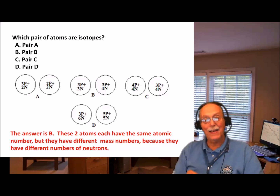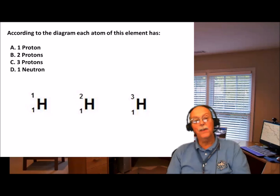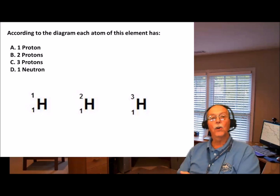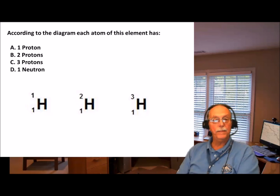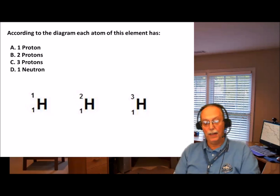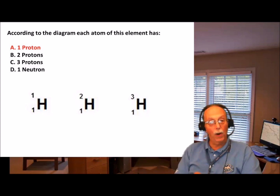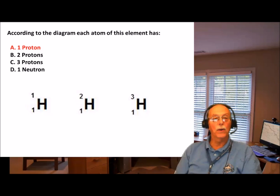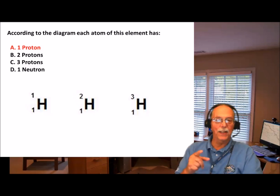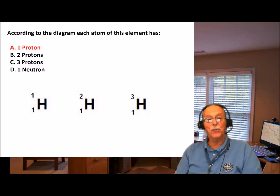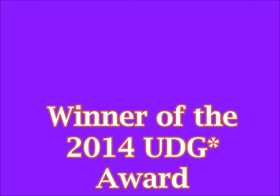Remember, the mass number is the mass of the nucleus. Now we're back to hydrogen. Answer this question: according to the diagram, each atom of this element has what? If you picked answer A, you were right — each atom has the same number of protons: one proton. Now you understand all you need to know about isotopes, and you'll never get isotope mixed up with ion or any other chemistry term again.